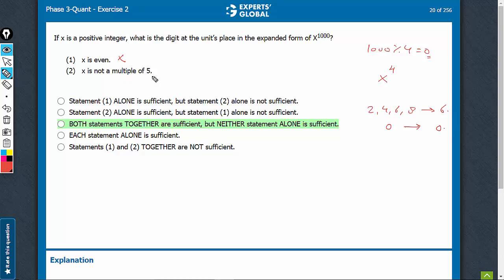Look at statement 2. X is not a multiple of 5 alone is, of course, not sufficient. But on combining, we know if X is not a multiple of 5, it cannot end with a 0.